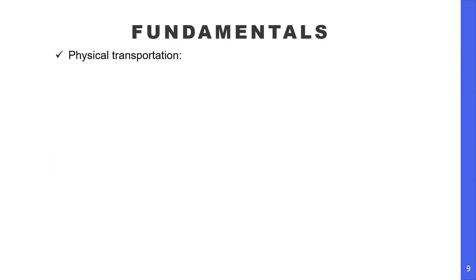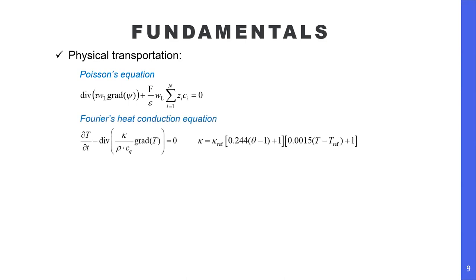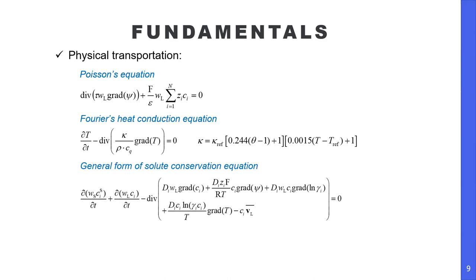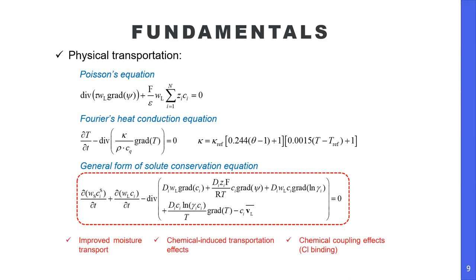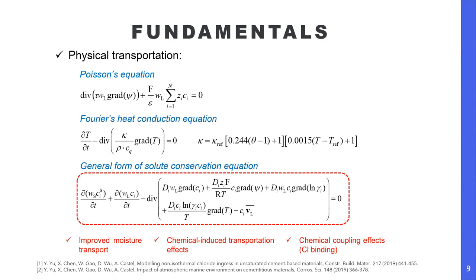In accordance with the three aspects, the CPM model consists of three major components. The first is to model physical transportation. For this I integrate the Poisson equation as well as the Fourier heat conduction equation, and I modify the general form of the solute conservation equation for improved ability in describing moisture transportation, chemical-induced transportation effects, and chemical binding such as chloride binding. For more details on the model development, you may want to refer to the two papers listed on screen.